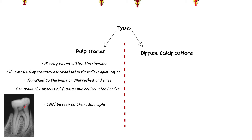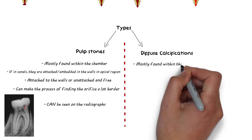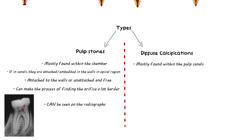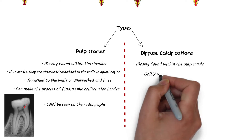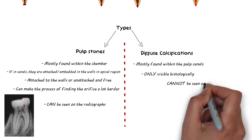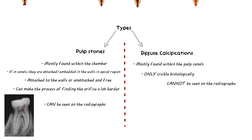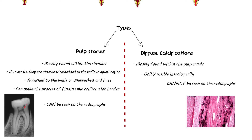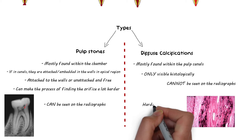Diffuse calcifications, on the other hand, are usually found in canals and less often present in the chamber. Unlike pulpal stones which are visible on radiographs, diffuse calcifications are only visible histologically on a histological slide, and they are not visible on radiographs because they are not concentric masses of calcified tissues like the pulpal stones are. Hence this accounts for the absence of radiographic findings of diffuse calcification, which indeed makes their detection a bit harder.